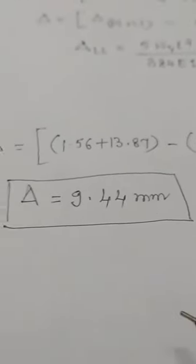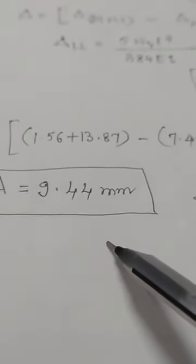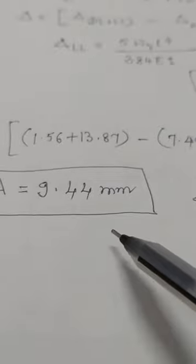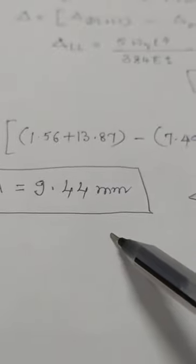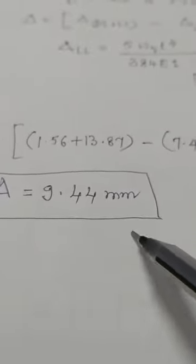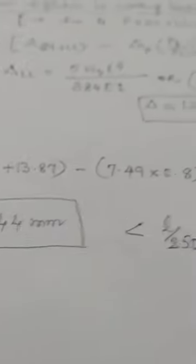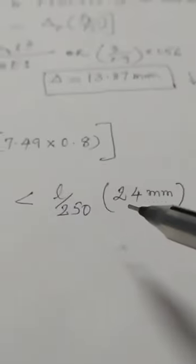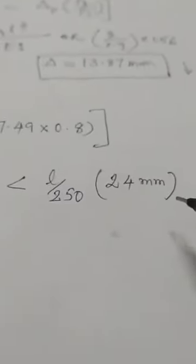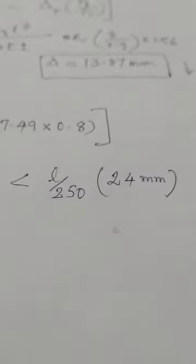After substituting all values in the Linz equation, the deflection due to prestress, dead load, and live load is 9.44 mm. The maximum deflection allowed is span/250 = 6000/250 = 24 mm. The developed deflection of 9.44 mm is well within the limit. Thank you.